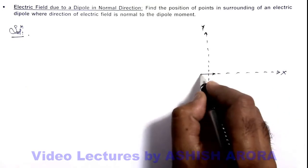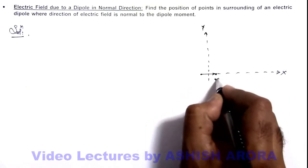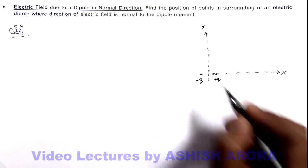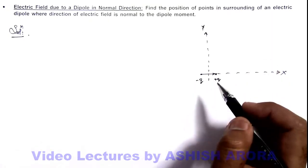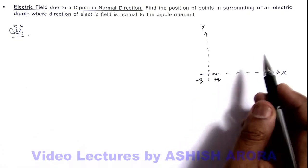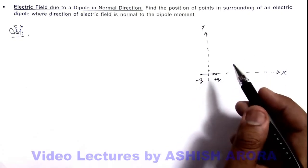Say the dipole charges are plus q and minus q. In its surrounding we know there exist one electric field vector in radial direction and other is in transverse direction.